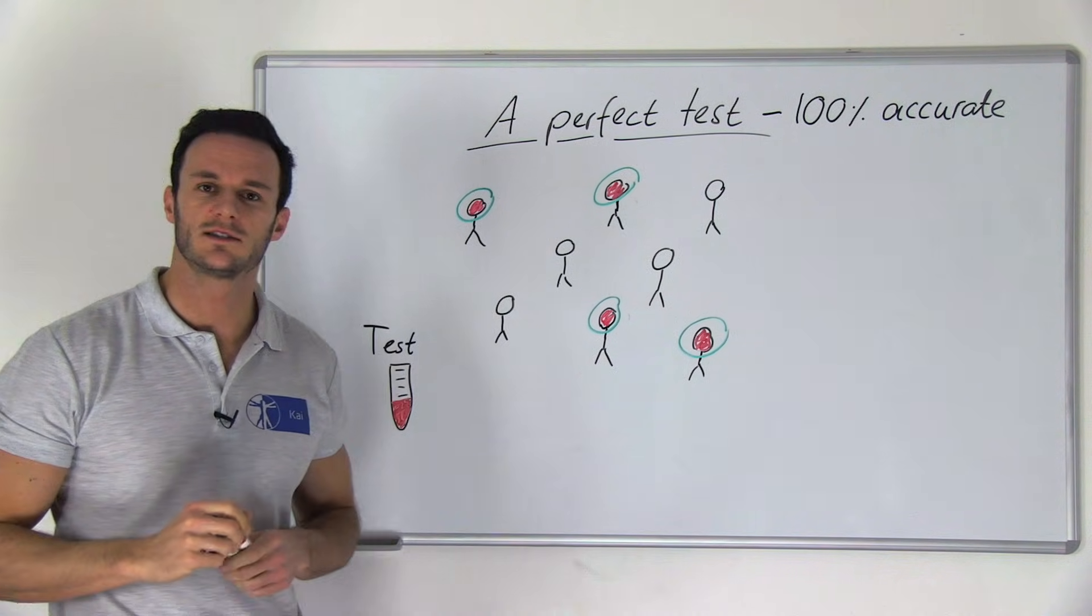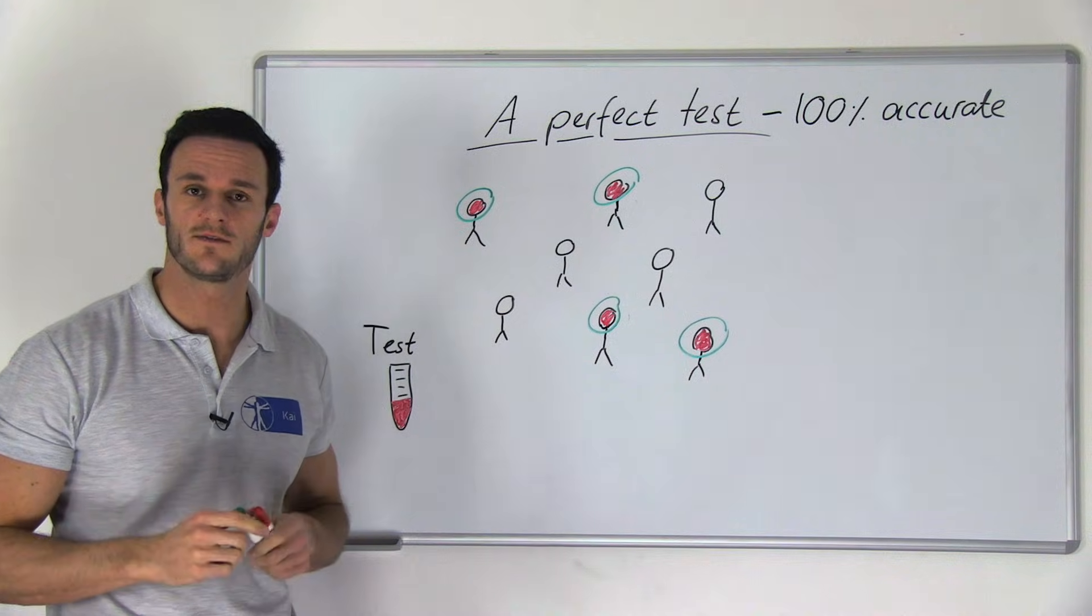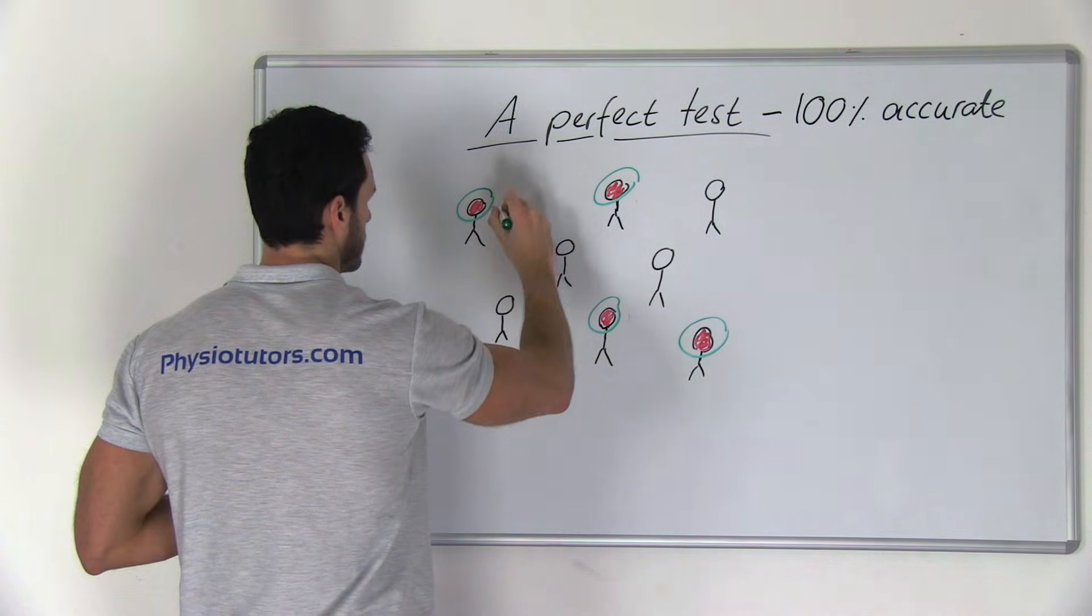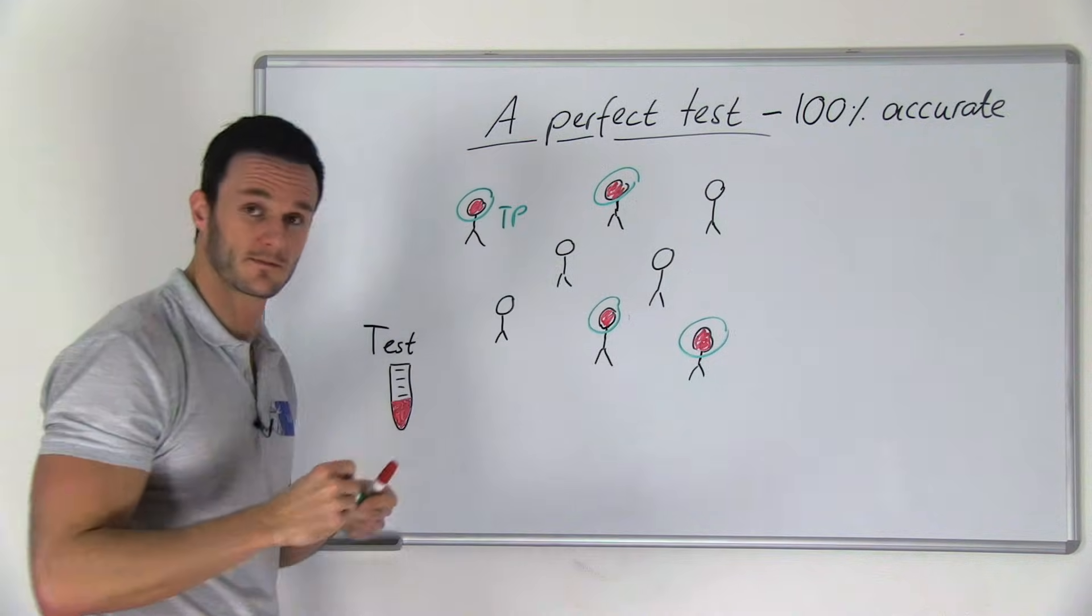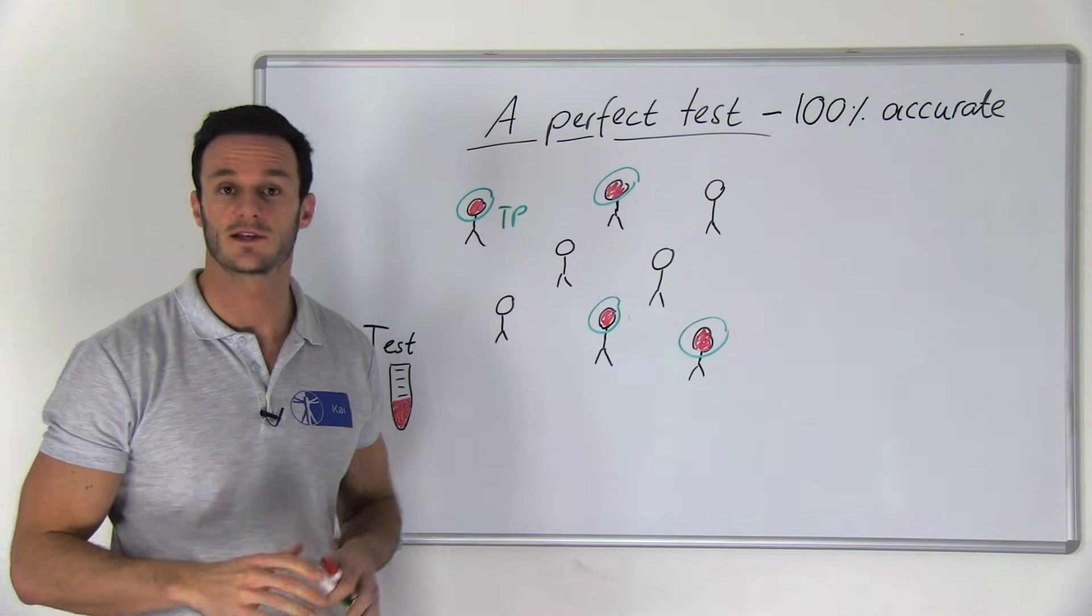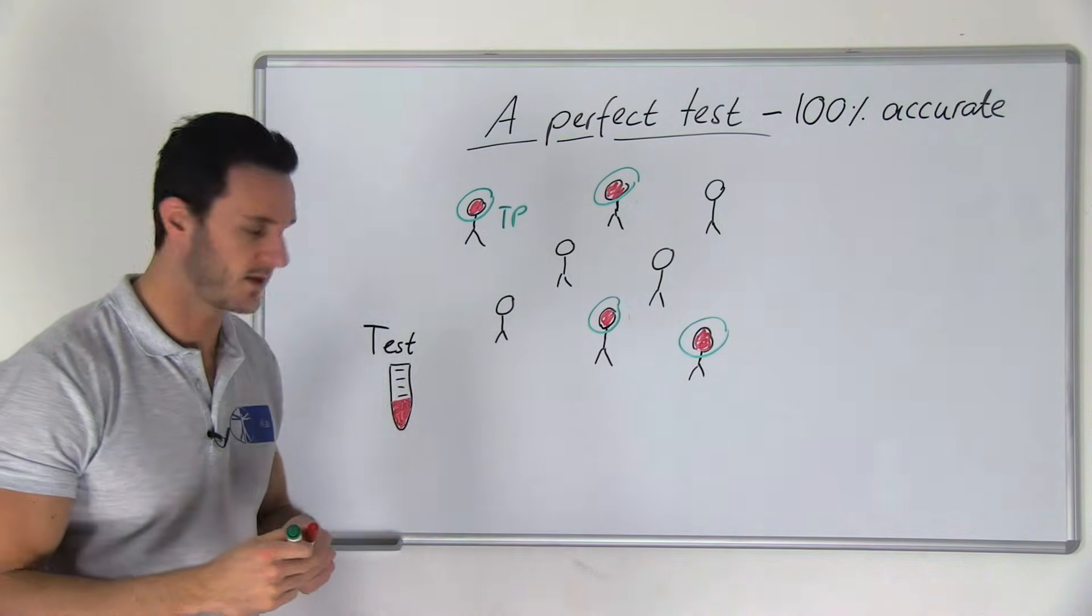The ones that have the disease and that are correctly diagnosed are called true positive, which is abbreviated with TP. The ones that do not have the pathology and that are correctly diagnosed as healthy are called true negative, abbreviated with TN.